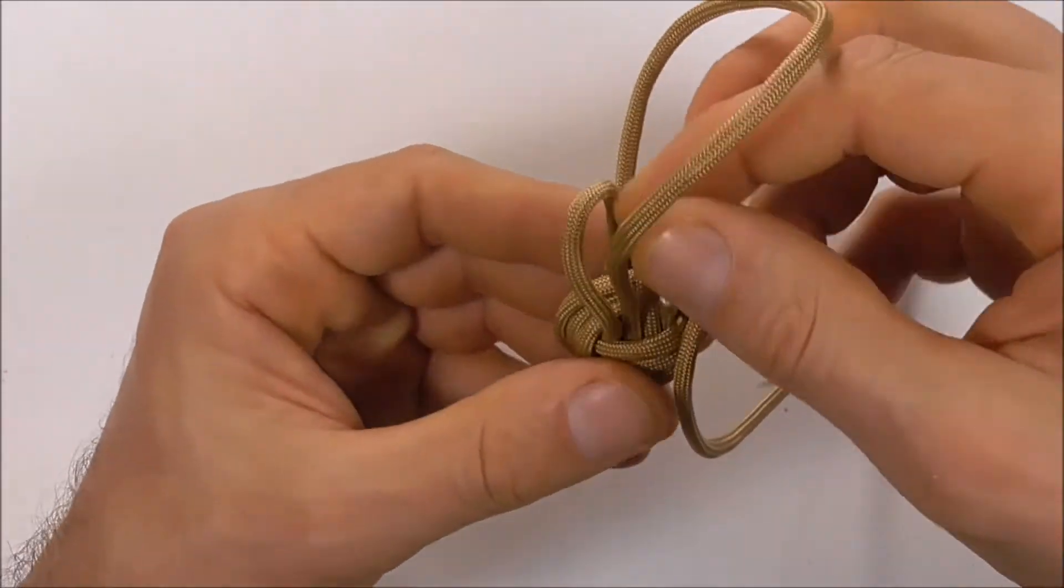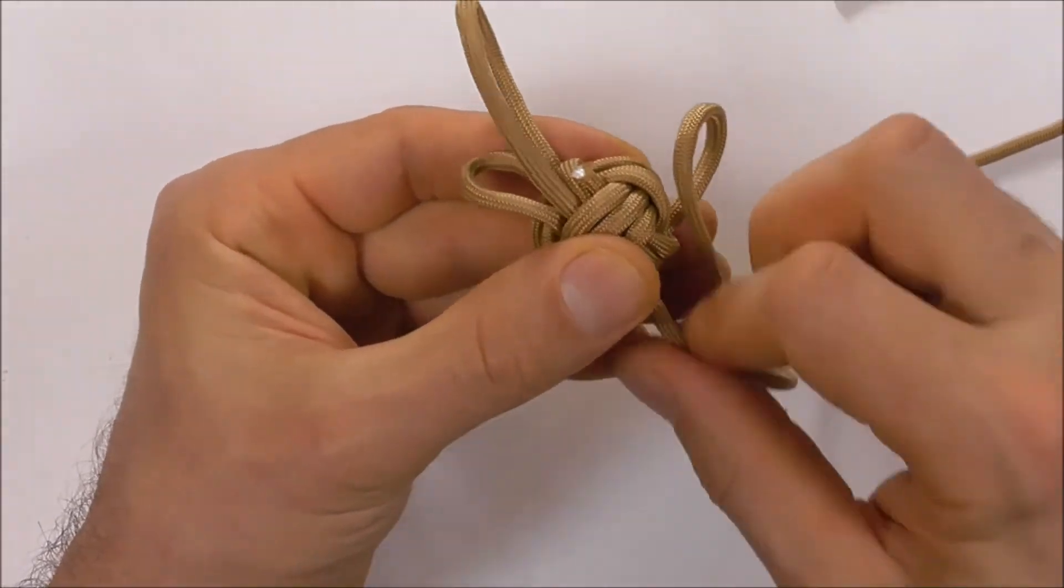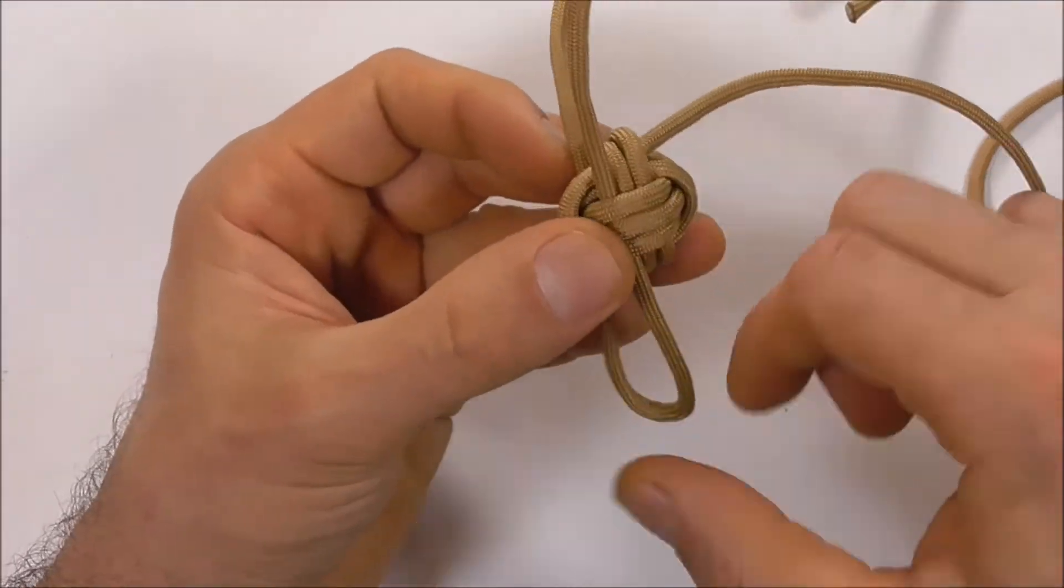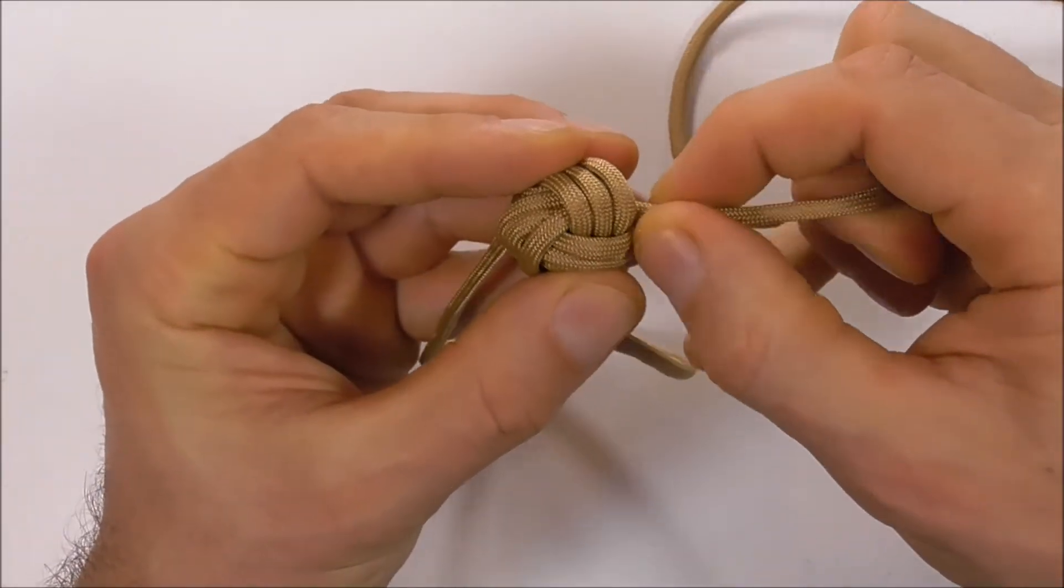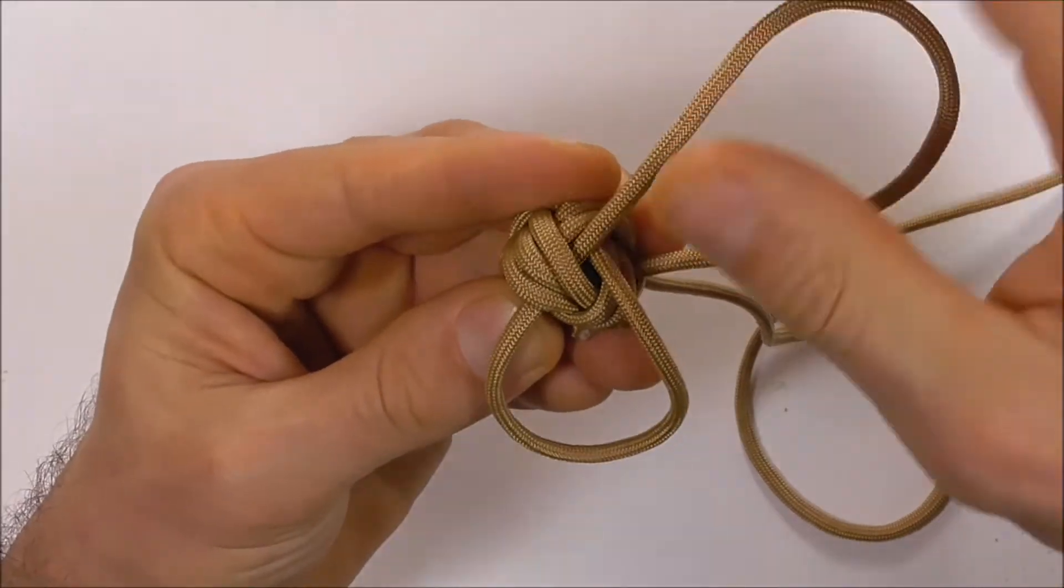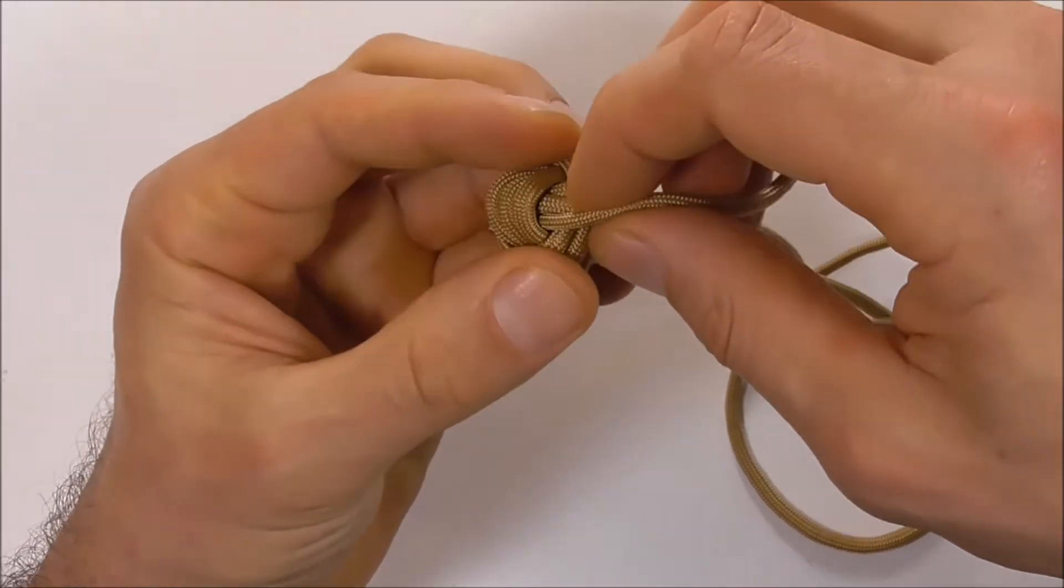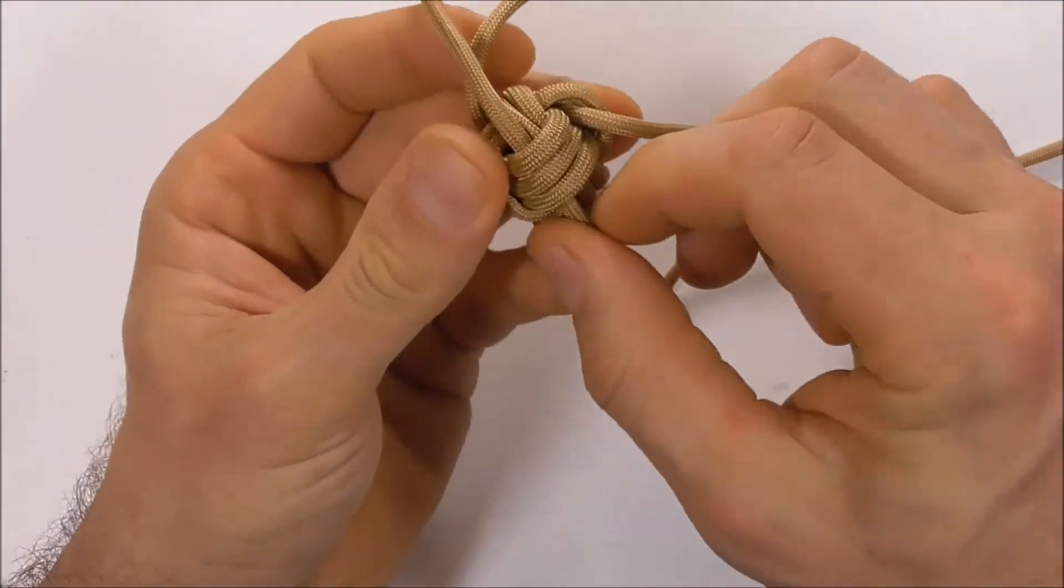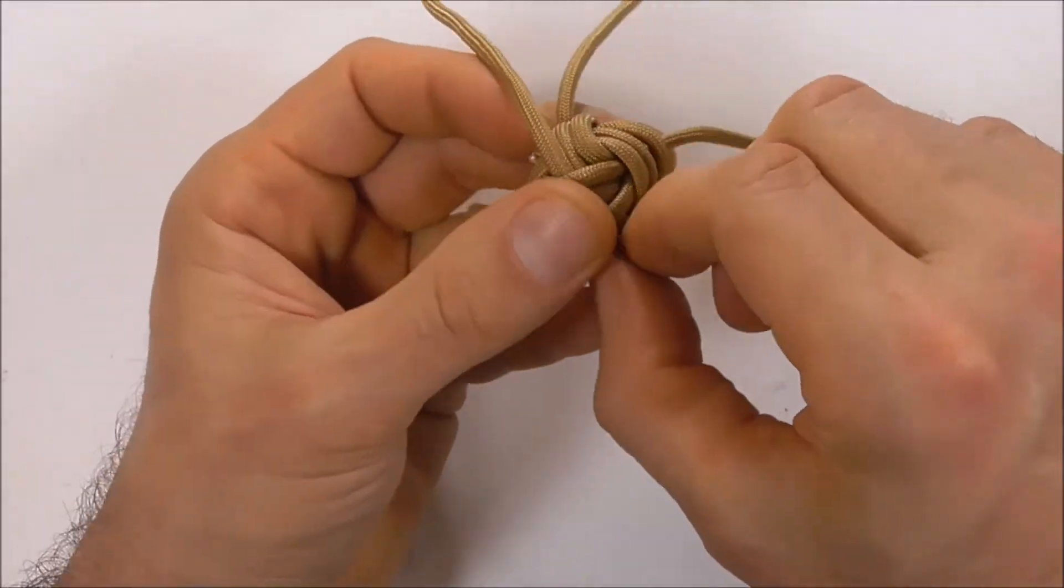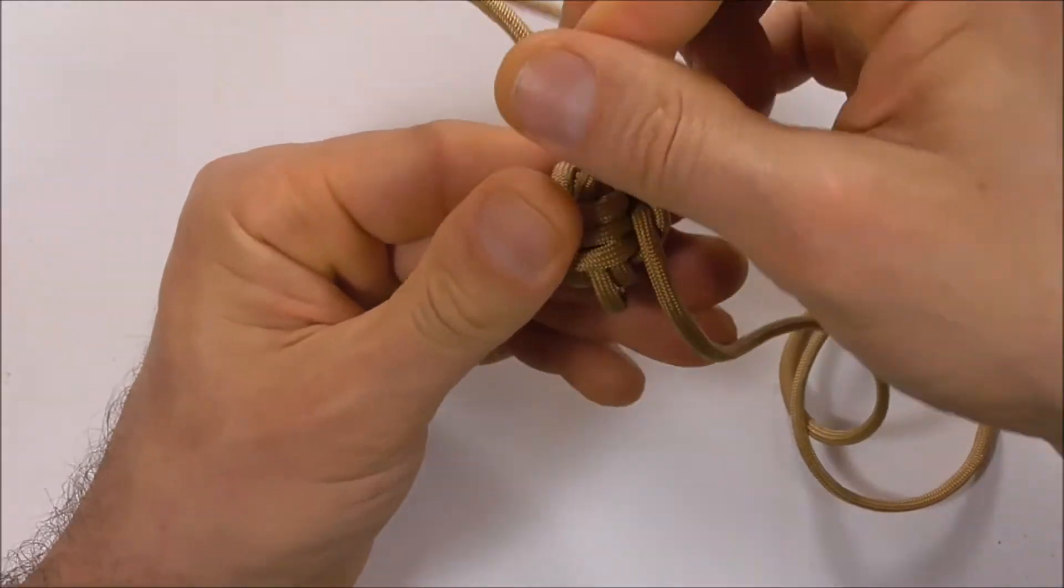And then proceed to work your way right around, pulling slack through and keeping those strands parallel. Just try and keep it as neat as possible as you work your way around. You're going to switch directions, so just keep working your way through your knot until you get to the other side.